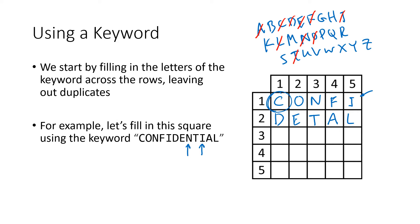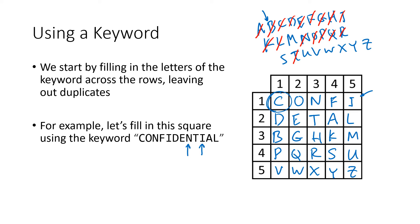Whether you use the alphabet in order or a keyword like 'confidential,' you end up with a Polybius square with the entire alphabet filled in — except for J. Now, before we actually use the square, we need to ensure our message has an even number of letters. We have to count the letters in the message we're trying to encode and make sure that number is even.